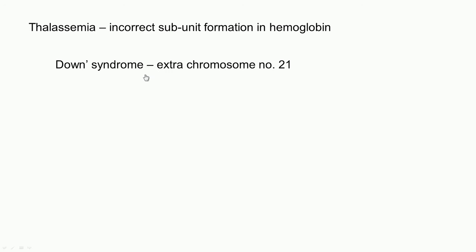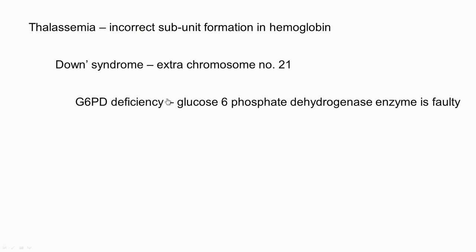Down syndrome is caused by an extra chromosome number 21. Typically people have 2 of each chromosome, but in Down syndrome there are 3 copies of chromosome 21. G6PD deficiency stands for glucose-6-phosphate dehydrogenase deficiency. This enzyme is faulty, which leads to major difficulties. Since glucose-6-phosphate dehydrogenase is an enzyme — a protein coded by a gene — it is a genetic disorder.